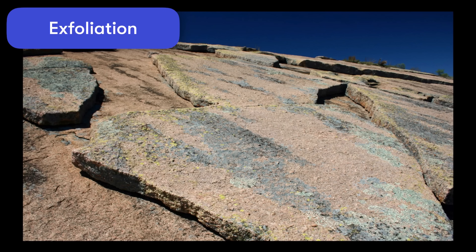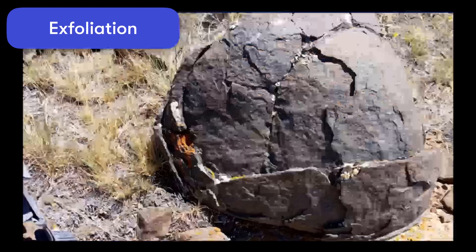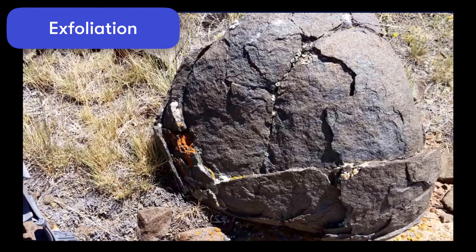The second type is exfoliation, which also involves temperature changes. This occurs in areas with really dramatic temperature swings — very hot during the day and very cold at night. The rock itself actually expands slightly in the heat and contracts in the cold. If this happens day after day, night after night, it weakens the outer layers of the rock until they eventually begin to crack and peel apart. It's almost like the rock is shedding its outer layers, physically breaking apart largely as a result of these temperature changes.